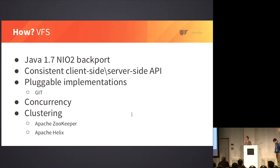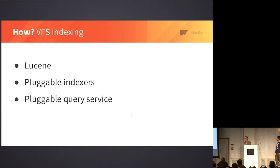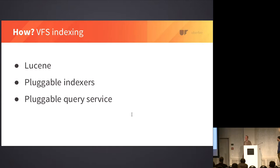The metadata engine: we back it with Lucene on the server side, but it's entirely pluggable as to what indexes you want to write. In our usage of UberFire in the Drools project, we have indexes for Java files, rule files, business processes, and more. We have a bunch of pluggable queries where you can query that metadata however you want. The service is there — you can use it optionally, or not. The choice is yours.